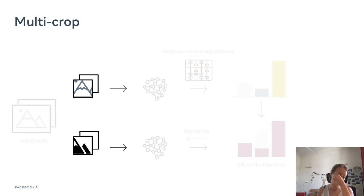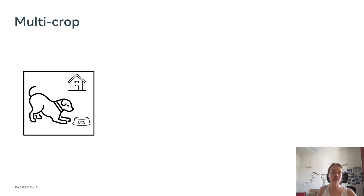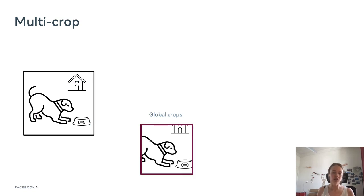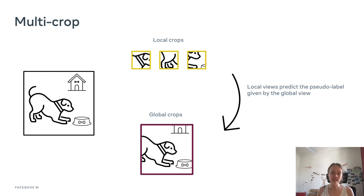Since learning invariants to cropping is crucial, we can reinforce this signal with multi-crop. From an image we take two sets of crops: global crops covering more than 50% of the image area, and local crops covering only parts of the image. The local views must predict the pseudo label given by the global view, encouraging local-to-global matching. As we'll see, this is very important for improving performance.